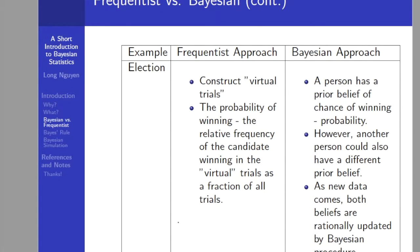About the election example, on the frequentist approach, the candidates only ever stand once for this particular election, so we cannot perform repeated trials. In a frequentist point of view, we construct virtual trials of the election process. The probability of the candidate winning is defined as the relative frequency of the candidate winning in the virtual trials as a fraction of all trials.